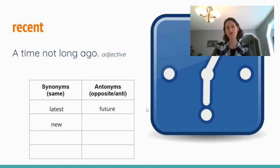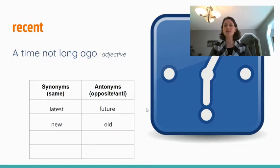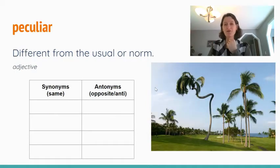Some opposite things could be something in the future because recent is talking about in the past, but the opposite of that is the future. And the same for old. Recent is something that's just happened not long ago but something that's old happened a long time ago. So those would be some antonyms for recent. You can possibly think of more. I'm just giving you some for each one.